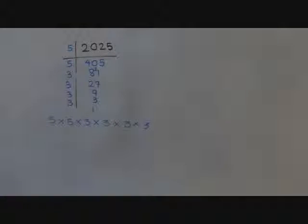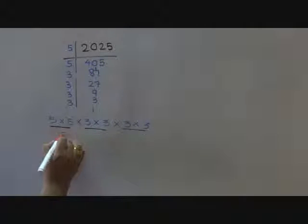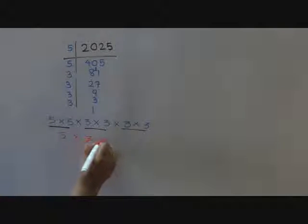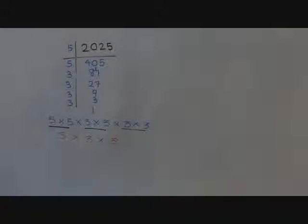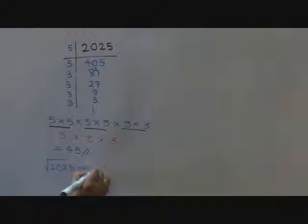We are going to write these numbers down here, which is 5, 5, and 3. Now we are going to remove common digits — pairs — and write them below and multiply them to get the square root. 5 into 3 is 15, and 15 into 3 is 45. So our square root of 2025 is 45.